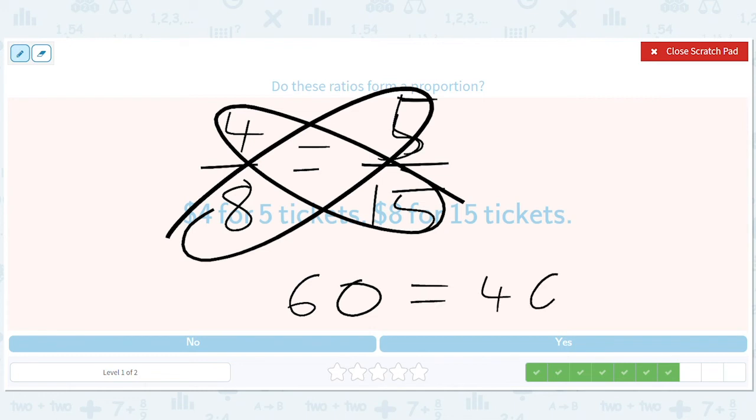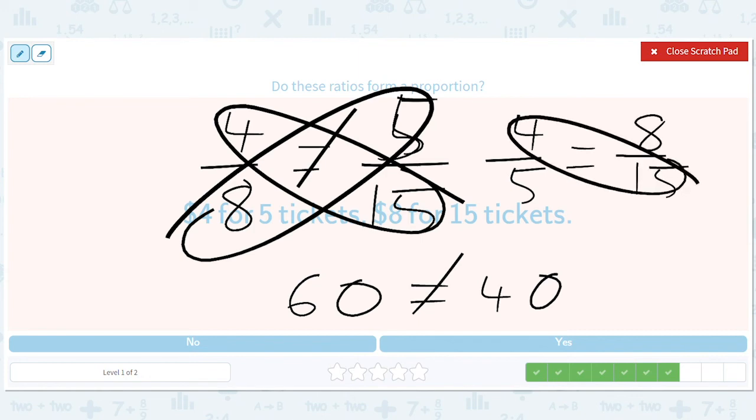60, 40, not equal. So a fun thing is, if we had set up the cross multiply the way we have been, four out of five equals eight out of 15. Right? You get the same things. You get 60 and you get 40, right?